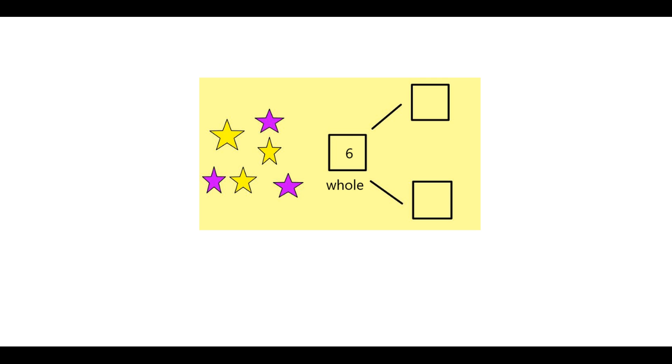So I'm just going to write three and that becomes one of the parts of the whole which is six altogether. The other part is obviously the yellow stars which is one, two, three. And again we have a second part of three.